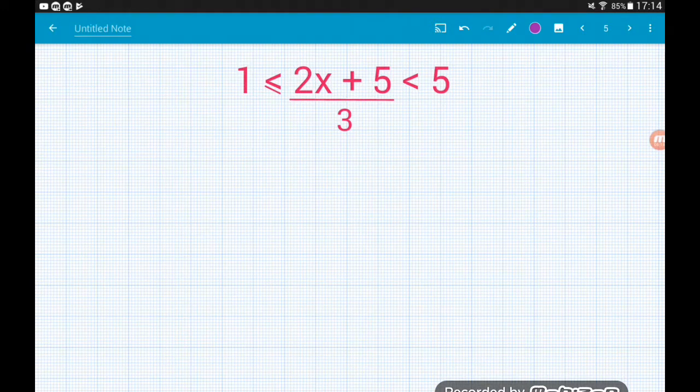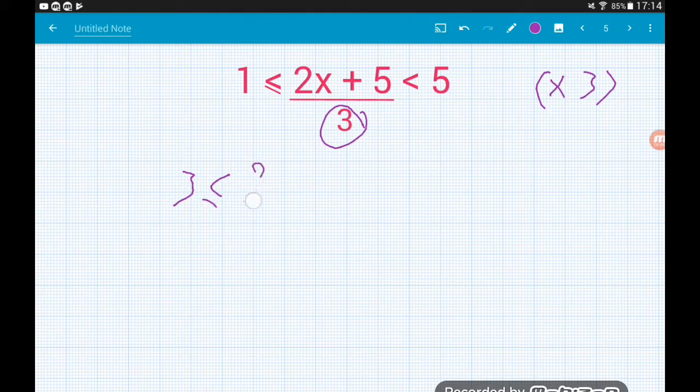Okay, the last example. Bit of a monster maybe. No problem there. So we've got 2x add 5 over 3 is greater than or equal to 1, strictly less than 5. So the first thing we need to sort out is the 3 on the bottom. So that's the division by 3. To cancel our division, we multiply. So we multiply each of the 3 bits by 3. So we're going to get 3 is less than or equal to 2x plus 5 is less than 15. So that's sorted out of the bottom of the fraction.